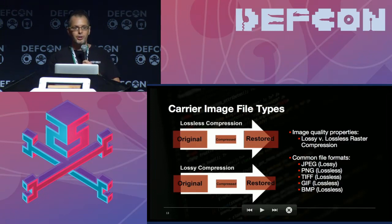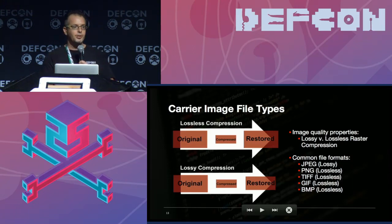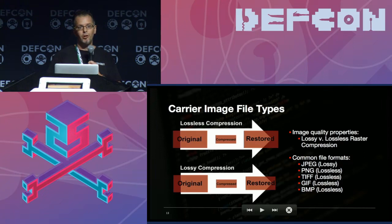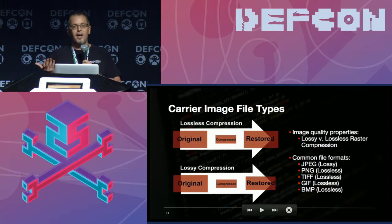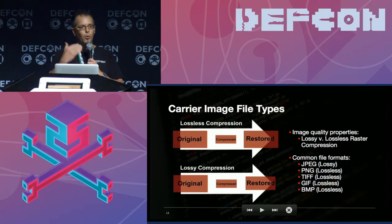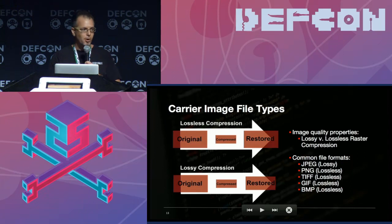It's important to consider the compression methods employed by these image formats when using them as carriers. Looking at JPEG, PNG, TIFF, GIF, and BMP — most are lossless but have some lossy capacities. GIF, for example, uses compression and may lose data as it's compressed. A lot of these image formats leverage compression, which had to do with the early days of the web so files wouldn't be too big for modem connections. Today there's a lot of information about those compression techniques and metadata structure that can be targeted.